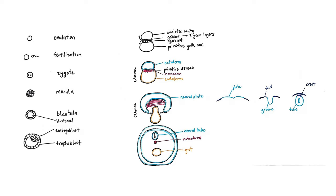To wrap up: it's so important in embryology and anatomy to draw things out — make clean drawings, use lots of colors, and explore different views. A quick sketch going through the process from ovulation through fertilization, the zygote, morula, blastula with its cavity, the embryoblast becoming epiblast and hypoblast, those three germ layers, and then the pinching off of the gut to form the cross-section with neural tube, notochord, and primitive gut — this kind of active drawing is the best way to learn this material.